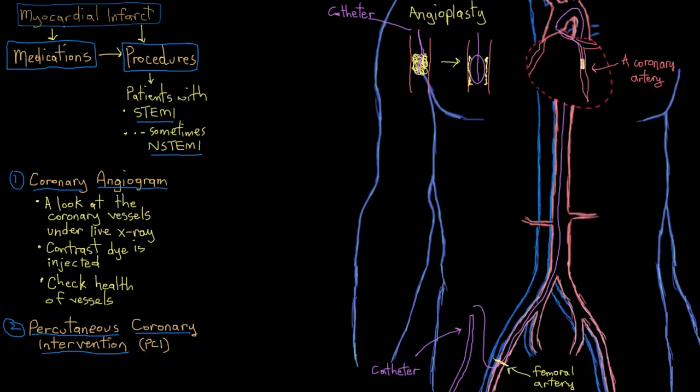Or they'll do an angioplasty, so what we just saw here, and insert a stent, which is a tough mesh-like cylinder made out of metal, that gets left behind in your coronary vessel to prop it open. So that's PCI, that's percutaneous coronary intervention.